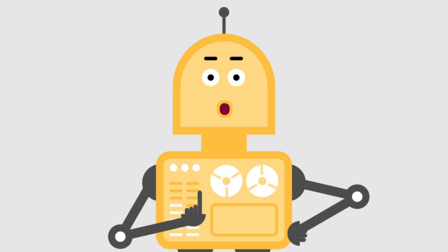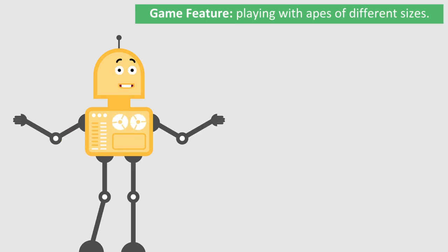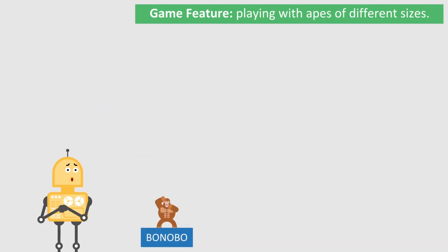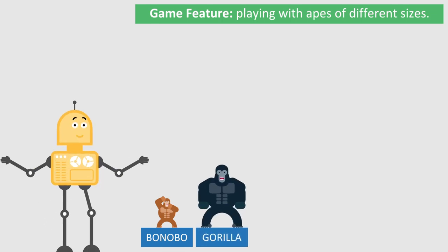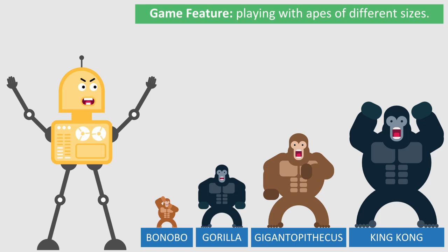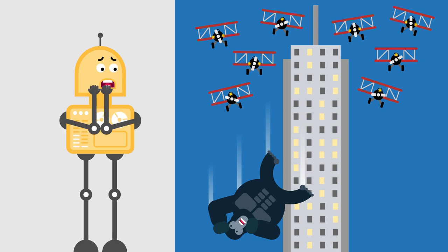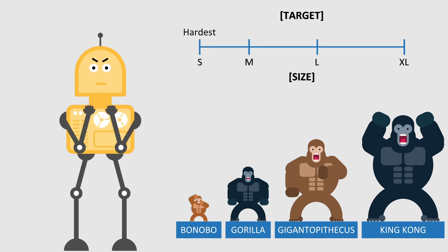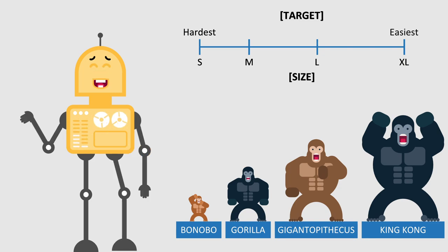Before we end this video, here is a bonus part. As you could see in the introductory section, this game has a nice feature — it can be played with monkeys of different sizes. So let's introduce the fighters. The smallest fighter is bonobo, also called dwarf chimpanzee. Something bigger is classic gorilla, the largest living primate. The next one is Gigantopithecus, an ape from the early to middle Pleistocene. And the biggest fighter is King Kong, a gigantic prehistoric ape, unfortunately died after falling from a skyscraper after being attacked by airplanes with guns. Considering the size, it is obvious that bonobo is the hardest target, and King Kong is the easiest target. So the fight between King Kong and the bonobo should be unfair, in favor of the smaller bonobo.